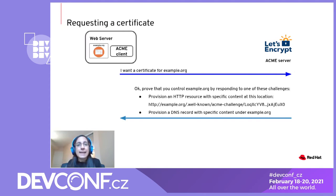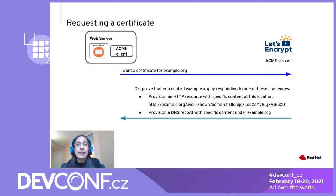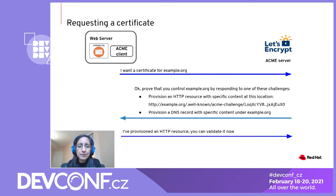As an example, an ACME server might ask the client to provision an HTTP resource with specific content at a specific location, or provision a DNS record with specific content. The ACME client only needs to respond to one of these challenges to prove ownership of the domain name.